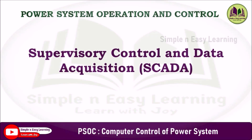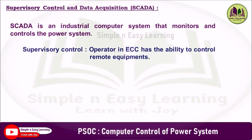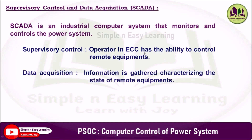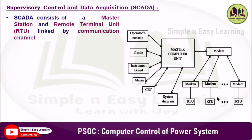Supervisory Control and Data Acquisition (SCADA) is an industrial computer system that monitors and controls the power system. It consists of two sections: supervisory control, which indicates the operator in the energy control center has the ability to control remote equipment, and data acquisition, which indicates that information is gathered characterizing the state of remote equipment. This block diagram represents the SCADA system.